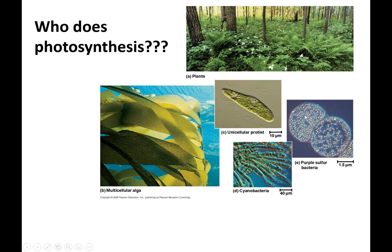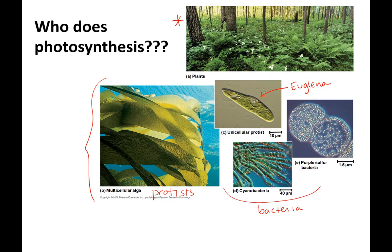Let's talk about who does photosynthesis. We all know about plants — that's who we think of, the green things. But water organisms, things like algae, which are not plants — they are protists — and phytoplankton and bacteria, like Euglena. All of these water organisms make over half of the oxygen on Earth.